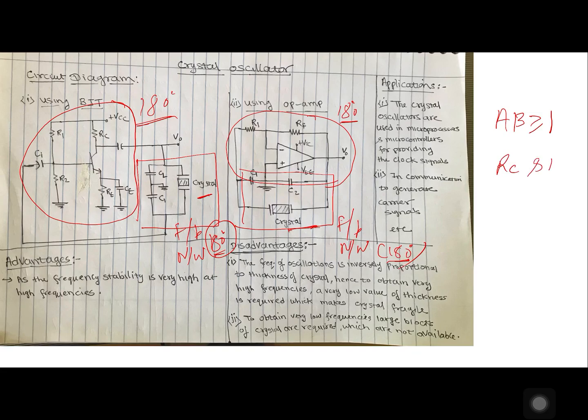Second Barkhausen's criteria which says A into beta is greater than or equal to 1 can be fulfilled by selecting RC and RF as potentiometer. So this condition can be fulfilled. So both the criteria of Barkhausen's are fulfilled. These circuits will behave as an oscillator.